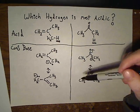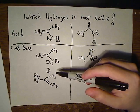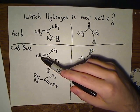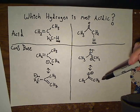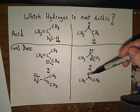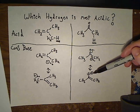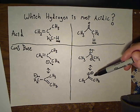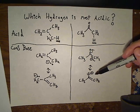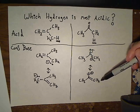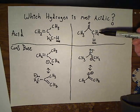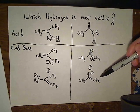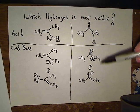The molecule on the left has a negative charge split between two carbon atoms, whereas the molecule on the right has a negative charge split between a carbon atom and an oxygen atom. Because oxygen is more electronegative than carbon, it handles that negative charge better, so it's more stable. The molecule with the most stable conjugate base is the most acidic.